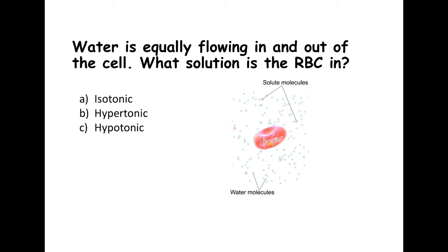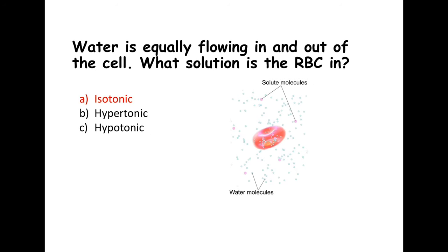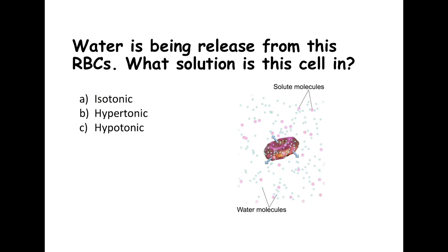Quiz time! Water is equally flowing in and out of a red blood cell — what solution is it in? Isotonic, hypertonic, or hypotonic? Hopefully you picked isotonic. If solute concentration is the same inside and outside, you'll have even water exchange and the cell retains its shape. Next: water is being released from red blood cells — what solution is this? If you said hypertonic, you are correct.